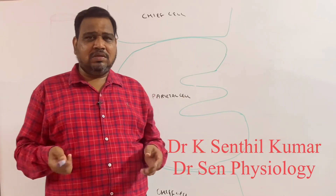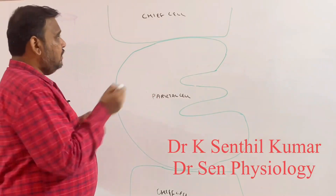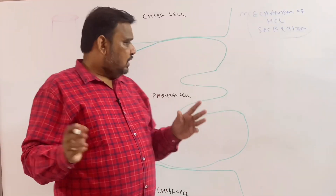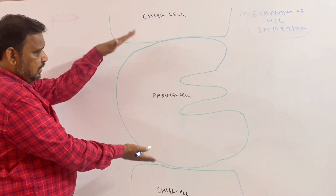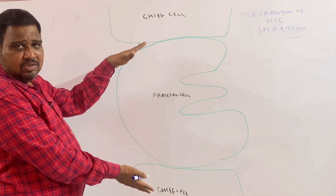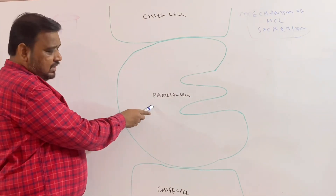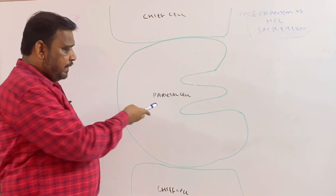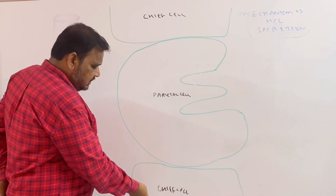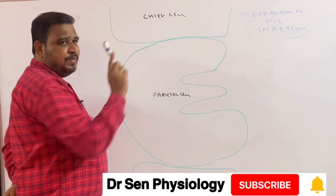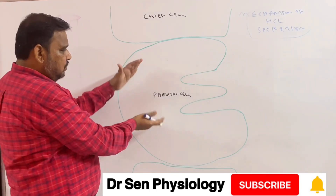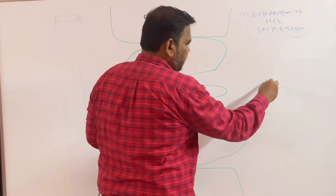Good morning students. Today I am going to discuss the mechanism of HCl secretion. I have drawn an oxyntic gland, one of the glands in the stomach. This is the parietal cell — parietal cells secrete HCl as well as intrinsic factor. This is the chief cell, which secretes pepsinogen. So I am going to discuss how this parietal cell secretes HCl.